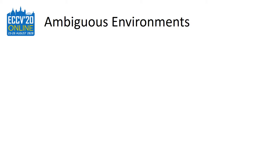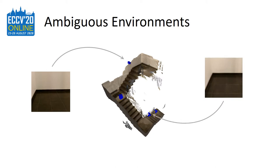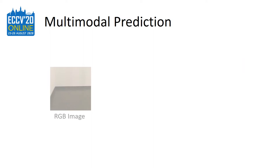Image-based camera localization has become a popular research direction. However, in highly ambiguous scenes such as the scene presented here, correct localization remains a challenging task, as images captured from distinct camera poses can have high visual similarity.